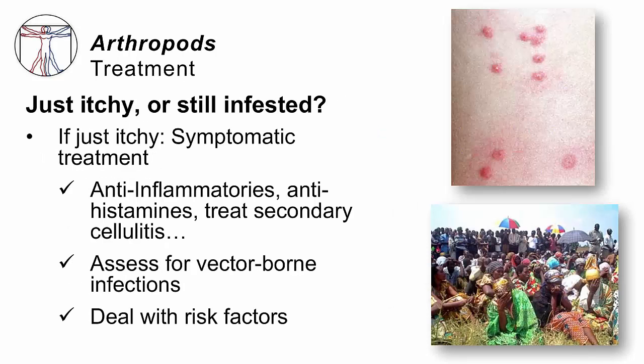How do we treat these patients? If the bugs are gone, we give symptomatic therapy — anti-inflammatories, antihistamines. If they're scratching themselves into a skin infection, we will treat that. Number two, we want to make sure they have or have not acquired a vector-borne infection. In particular, if you see bites and you know your patients are living in a refugee camp, you need to worry about the possibility of epidemic typhus — and of course, help reduce the risk by delousing that population.